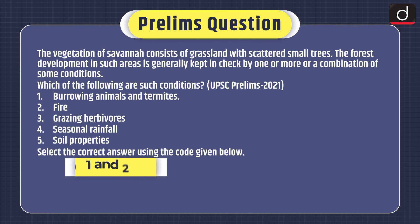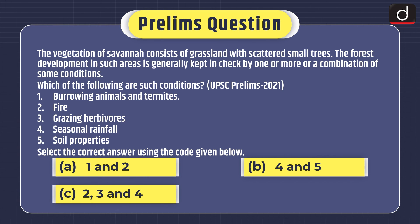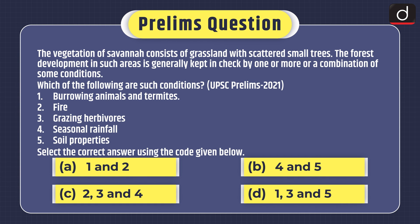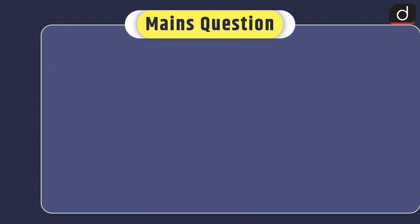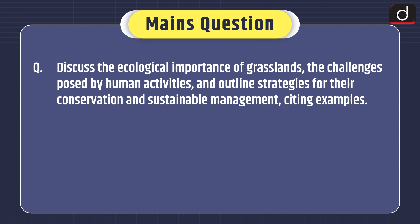Now it's time for practice questions. First, a prelims question from UPSC Prelims 2021: 'The vegetation of savannah consists of grassland with scattered small trees. The forest development in such areas is generally kept in check by one or more conditions. Which of the following are such conditions? 1. Burrowing animals and termites. 2. Fire. 3. Grazing herbivores. 4. Seasonal rainfall. 5. Soil properties.' Select the correct answer: (a) 1 and 2, (b) 4 and 5, (c) 2, 3 and 4, or (d) 1, 3 and 5. Mains question: Discuss the ecological importance of grasslands, the challenges posed by human activities, and outline strategies for their conservation and sustainable management, citing examples.